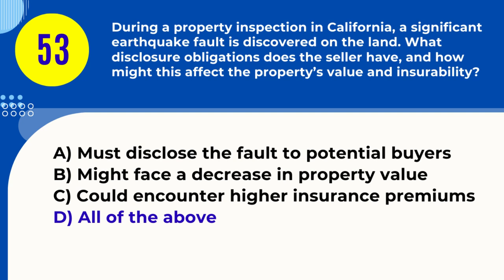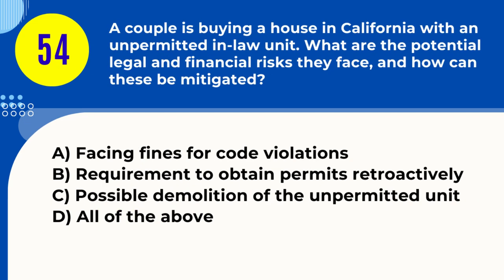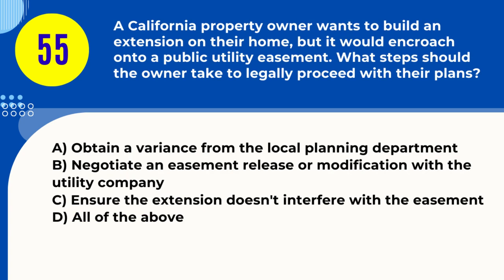Question 54. A couple is buying a house in California with an unpermitted in-law unit. What are the potential legal and financial risks they face, and how can these be mitigated? A. Facing fines for code violations B. Requirement to obtain permits retroactively C. Possible demolition of the unpermitted unit D. All of the above. Answer: D. All of the above. Explanation: Buying with an unpermitted unit can lead to fines, the need for retroactive permits, and potential demolition.